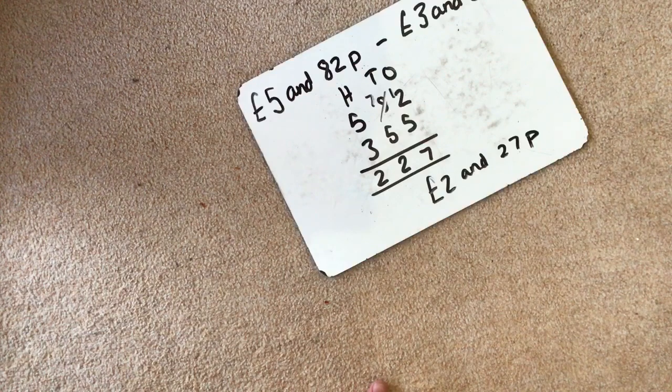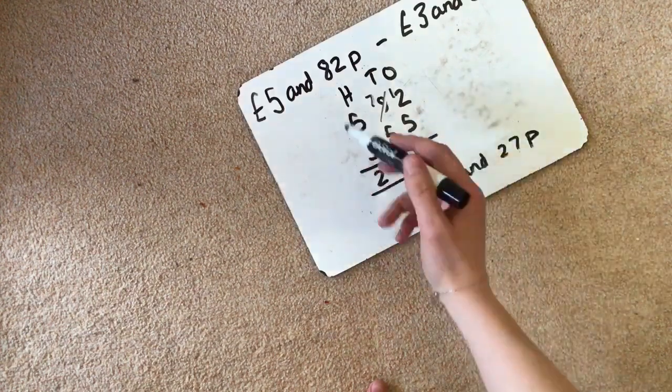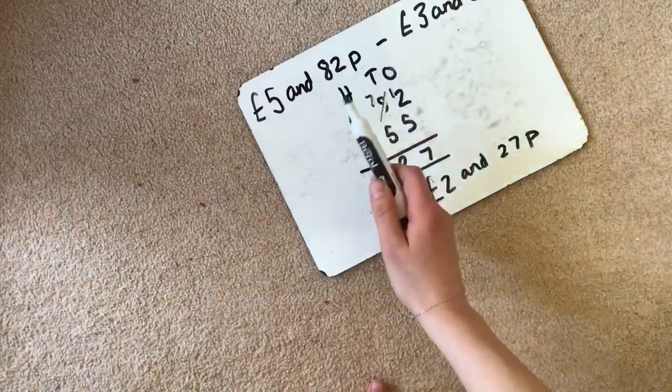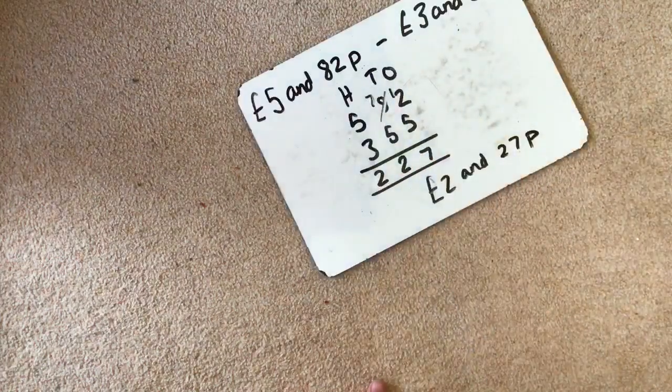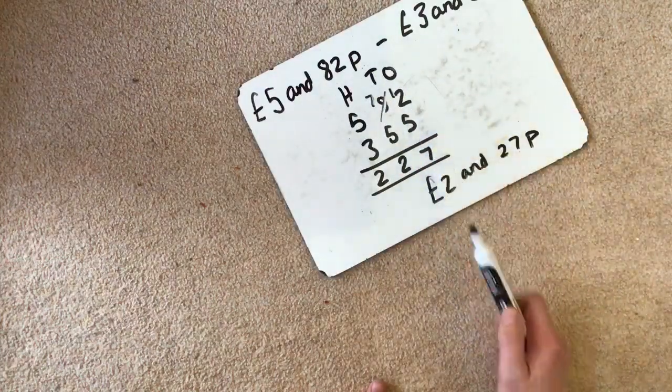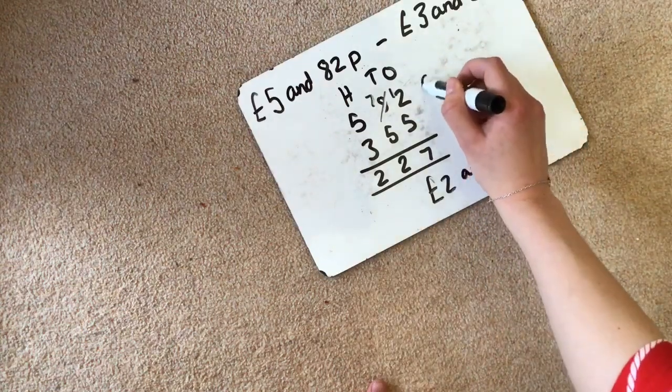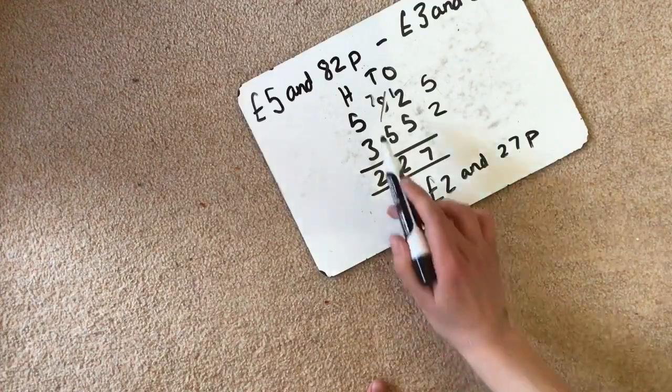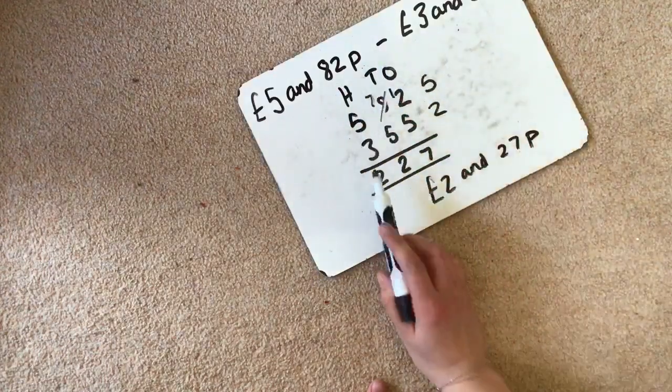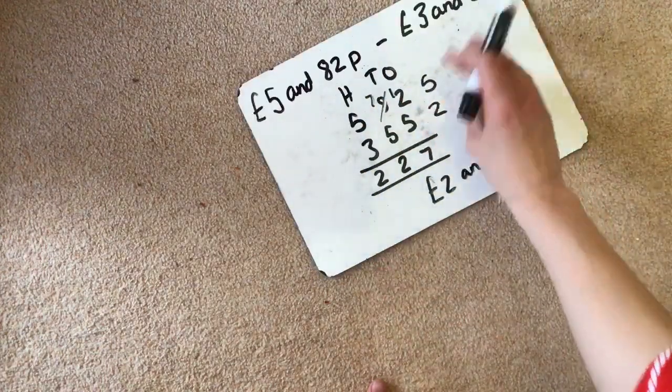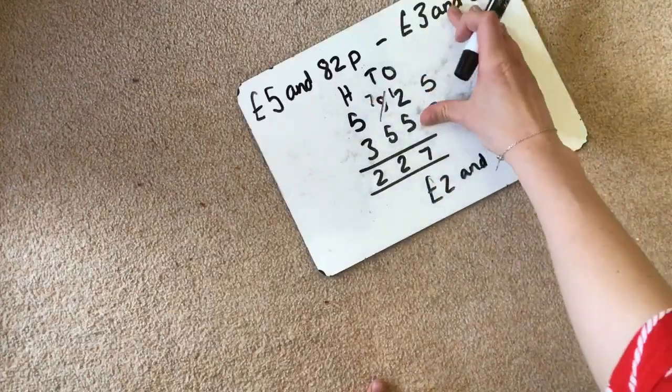Don't get confused with addition. Remember, with column subtraction, we need to regroup and move the tens or the hundreds into the next column to make sure we can do our subtraction. Don't just flip these around. Don't put 5 here and 2 here and think that you can do that. You are then changing the whole sum. You cannot just flip them around. So if you can't do it, go over and regroup.